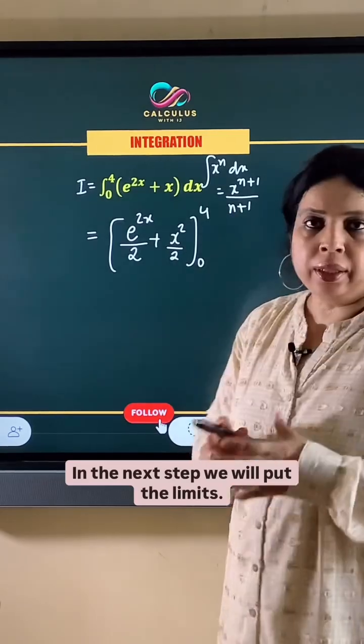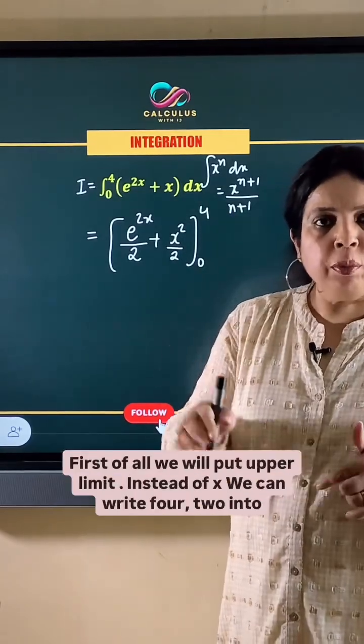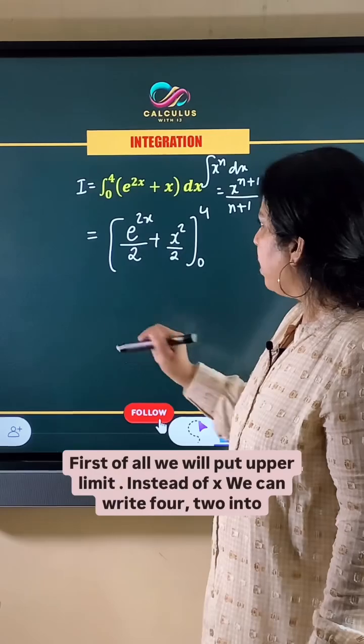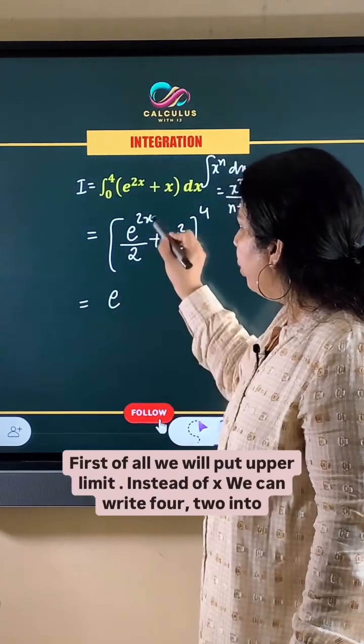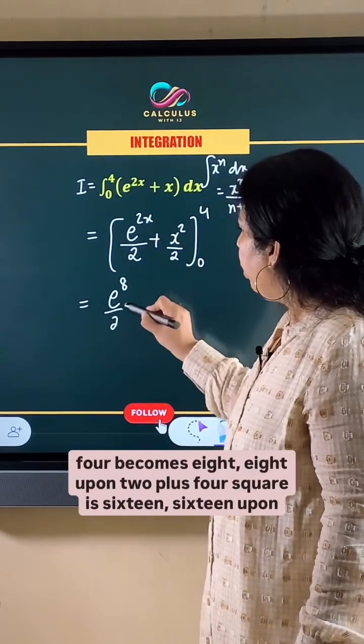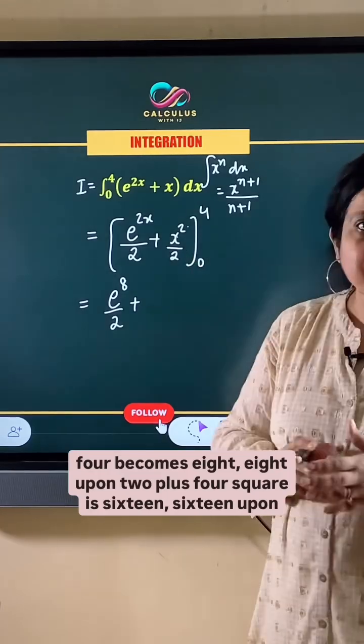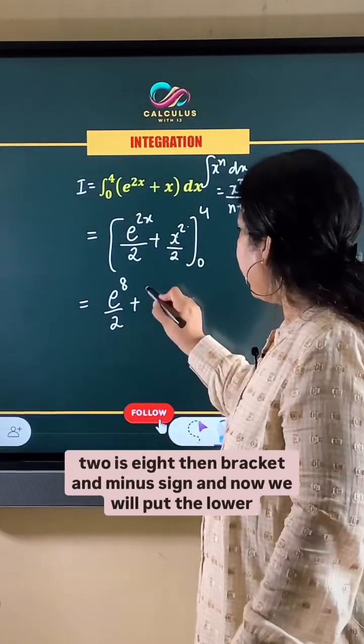In the next step we will put the limits. First of all we will put the upper limit. Instead of x we can write 4. So 2 into 4 becomes 8. Eight upon 2 plus 4 square is 16. Sixteen upon 2 is 8.